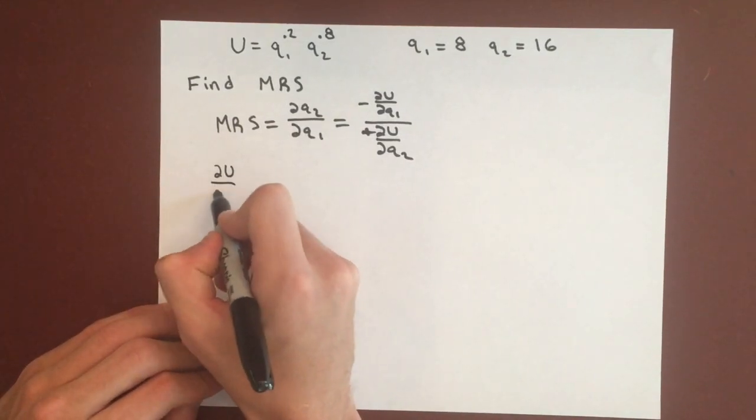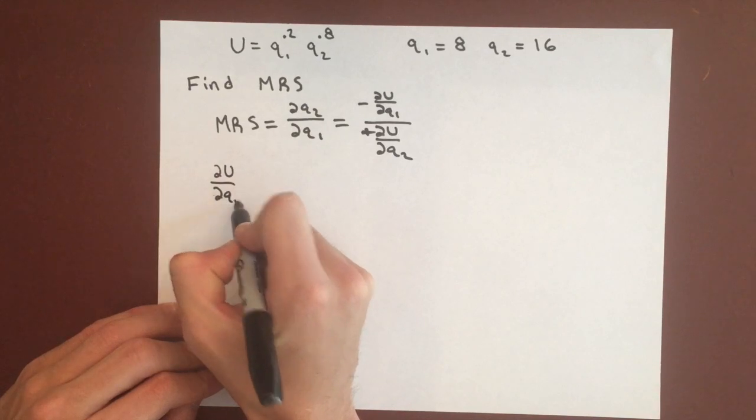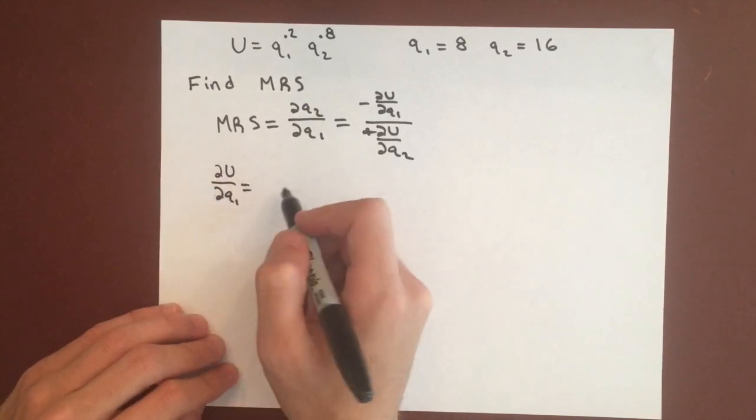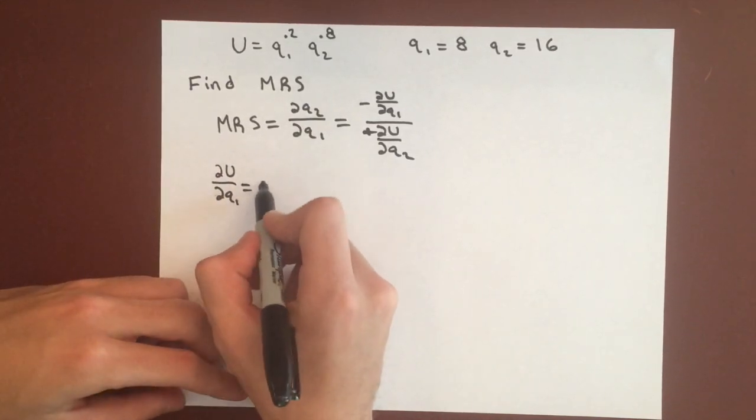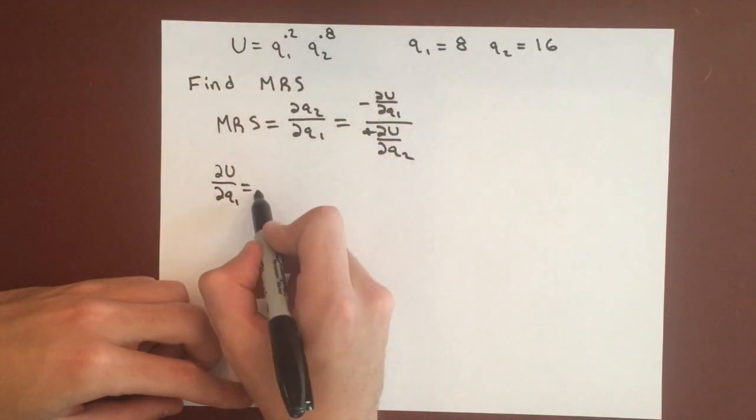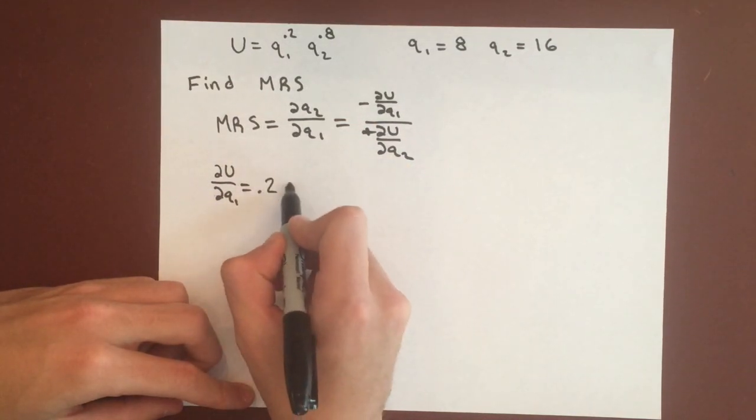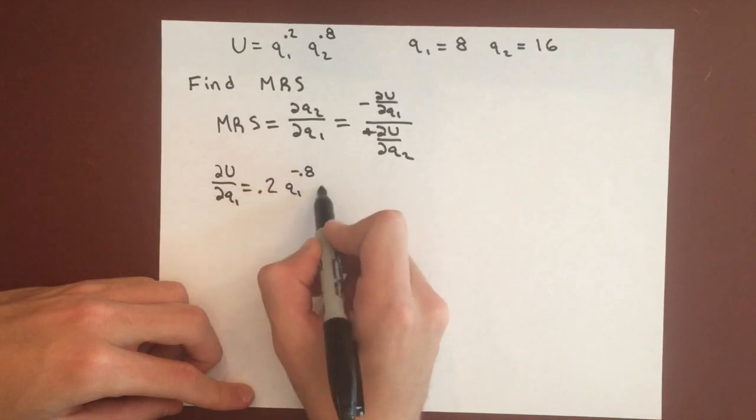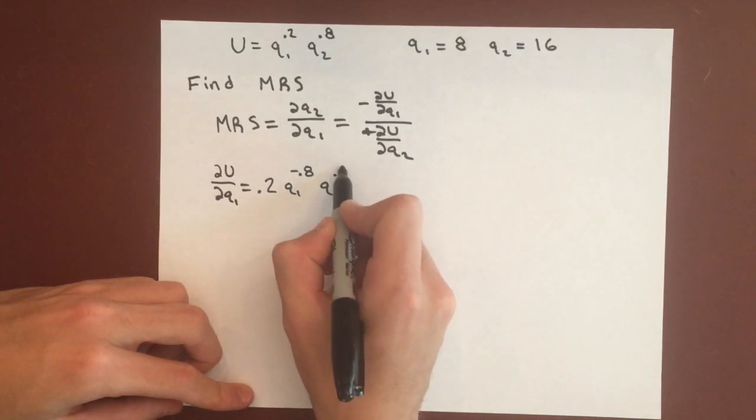So to get marginal utility of good 1, we have DU over DQ1. Take this partial derivative so we can get 0.2 Q1 to the negative 0.8 Q2 to the 0.8.